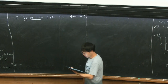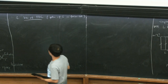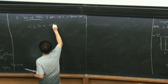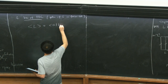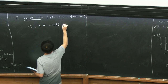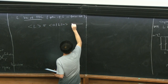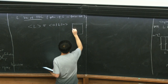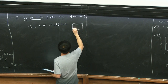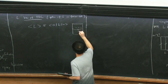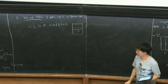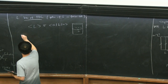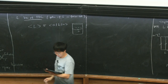The next important physical quantity that encodes information about the fusion category in the CFT is the VEV of a topological defect line, also known as the quantum dimension of L in the fusion category. This is a very simple notion: the VEV is defined as the expectation value of the topological defect line on the cylinder, with the line inserted wrapping the spatial cycle.